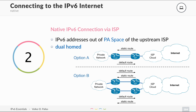In Option B, you have two routers on your side and the ISP also has two routers. Both your routers have default routes to the outside, and both ISP routers have static routes towards your network. If a cable or a router fails — no matter which one — you will still be online. This is a good type of connection.